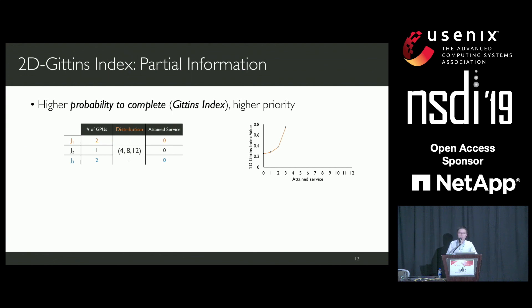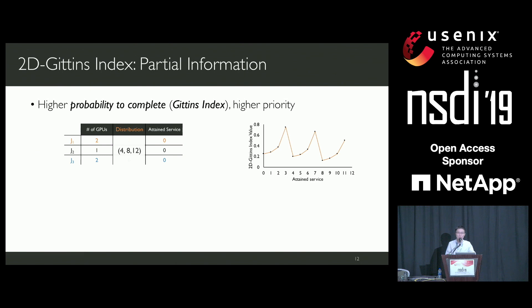At the beginning, when a job's attained service is getting closer to four units of GPU time—the data point in the distribution—the Gittins index will also increase. However, after receiving four units of GPU time without completion, there will be a huge degradation in the job's Gittins index and priority. This pattern repeats when the job's attained service approaches eight units of GPU time. Before scheduling, no job has received any GPU time, so they all share the same Gittins index and priority.